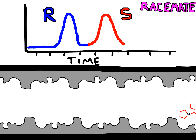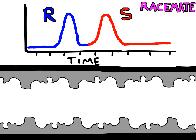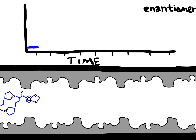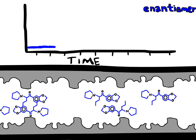Once one has determined the retention time — basically where the center of the peak is — for each separate enantiomer, one can use the method to distinguish between the R and the S enantiomer.